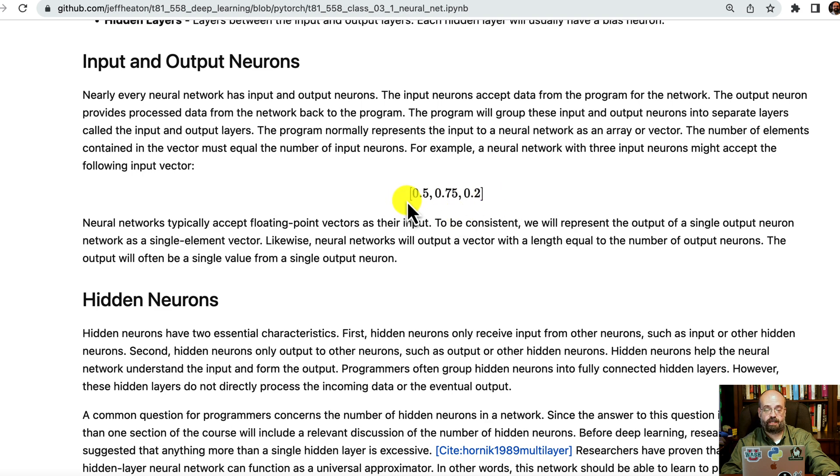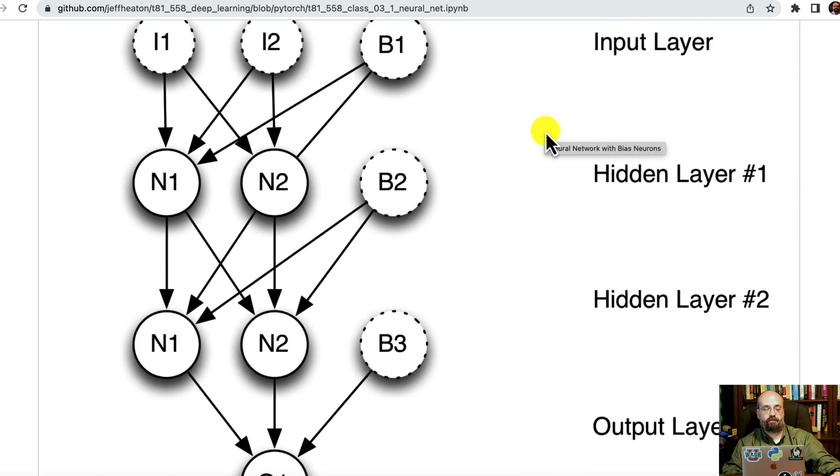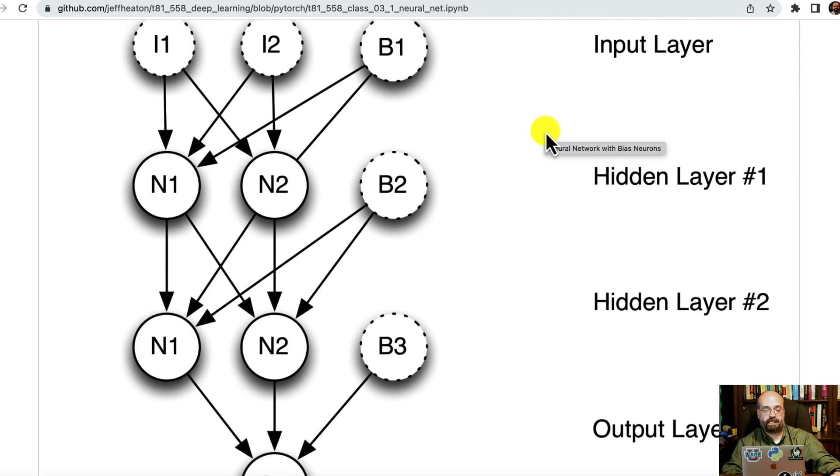Again, the input to the neural network is typically a vector or a higher dimension tensor. This is what a full two-input neural network might look like with all the biases. There's two hidden layers, one input layer and one output layer. And you can see they're dense layers. They're all connected. That should have an arrow there.